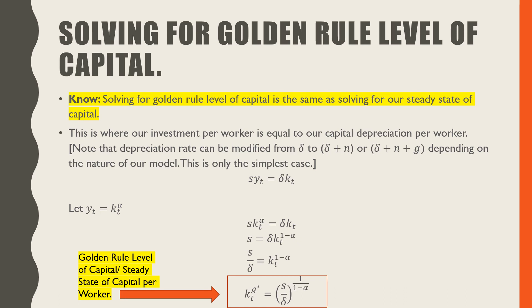So after all this algebra, and I made just one assumption over here, we assume the simplest production function, we can go and show that our golden rule level of capital is the same as our steady state of capital per worker.